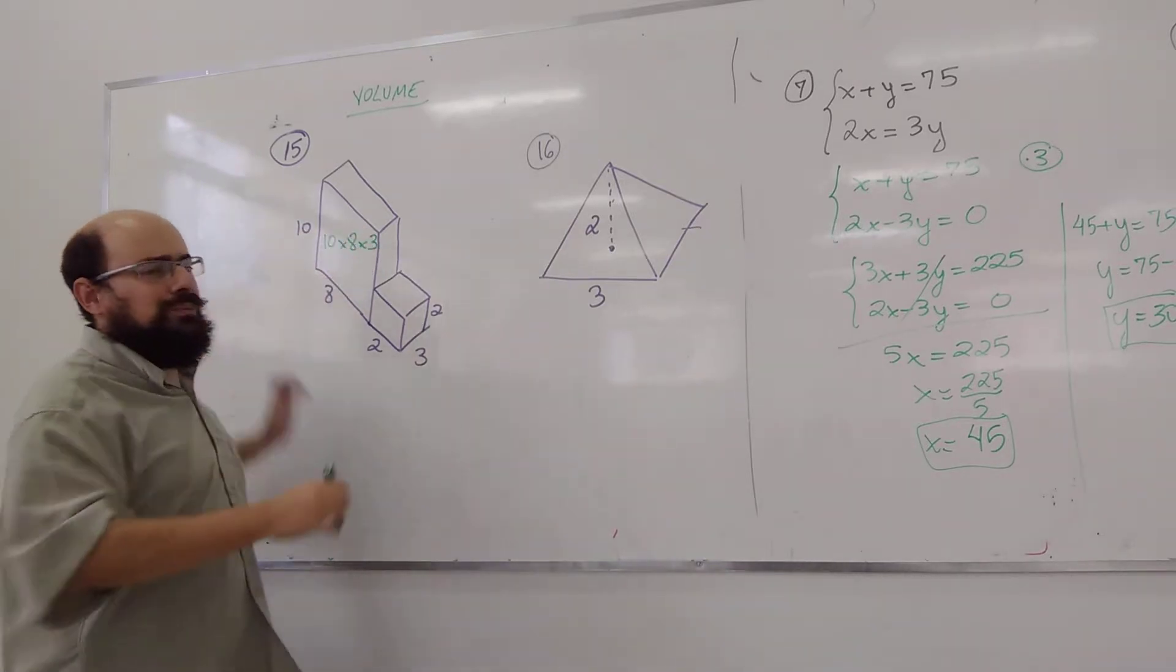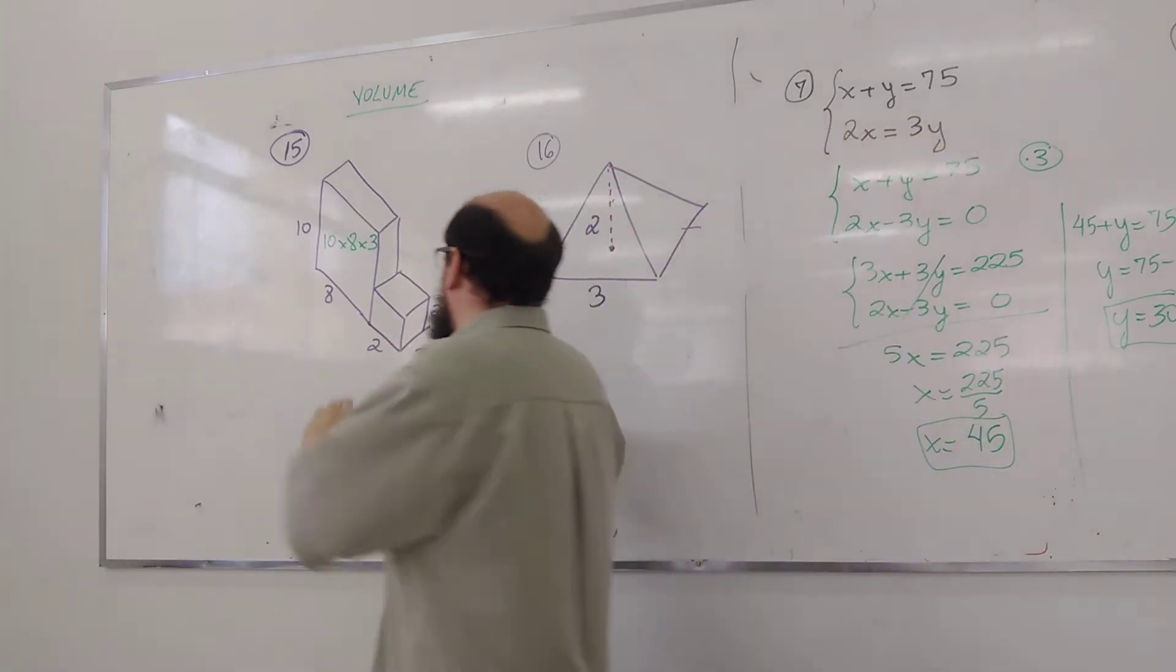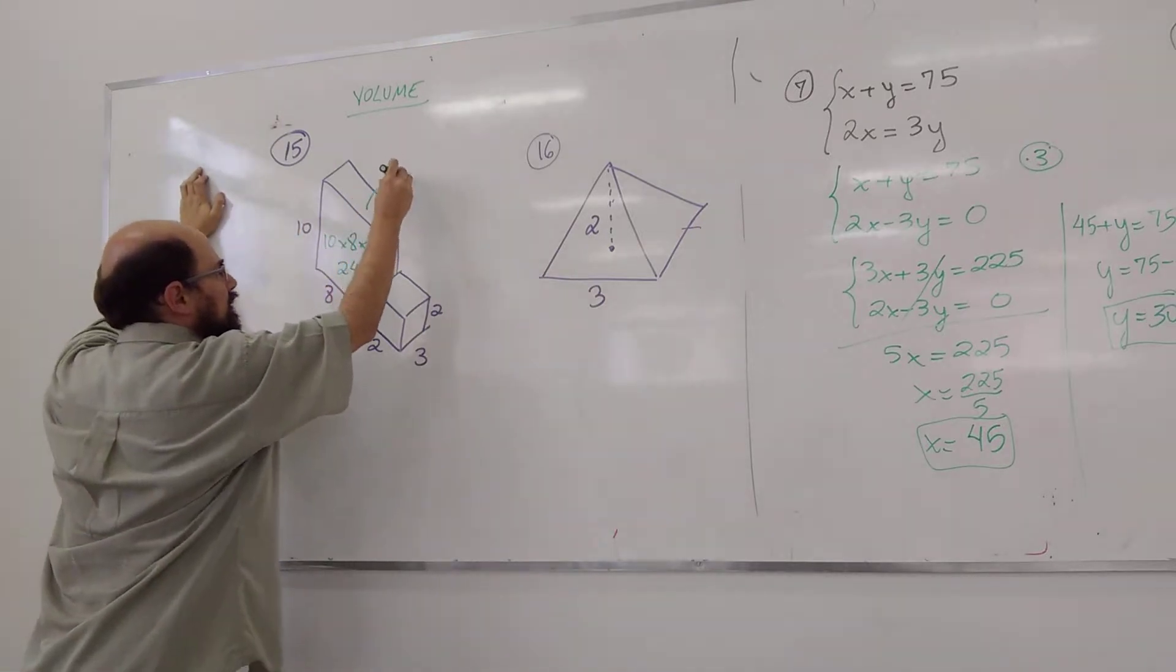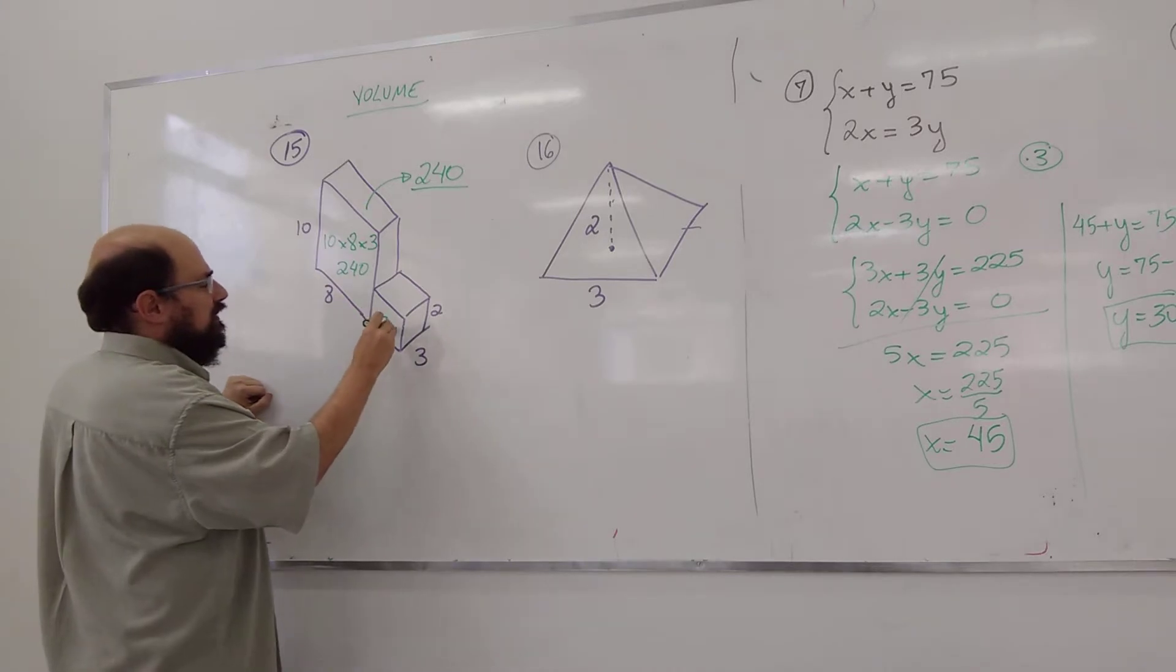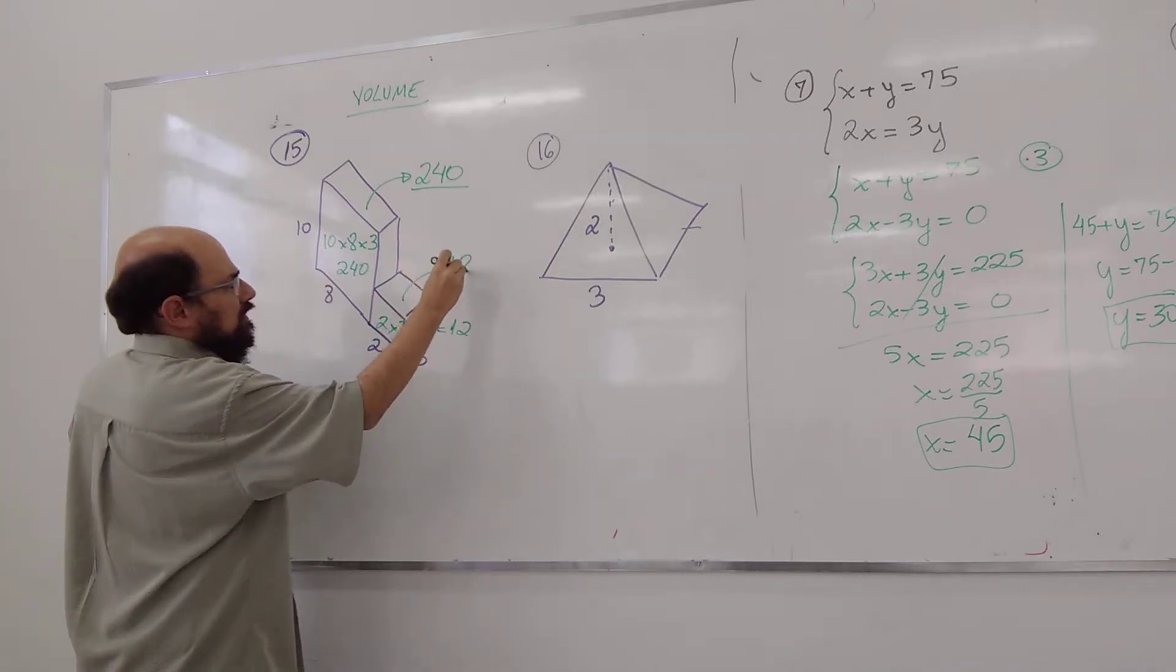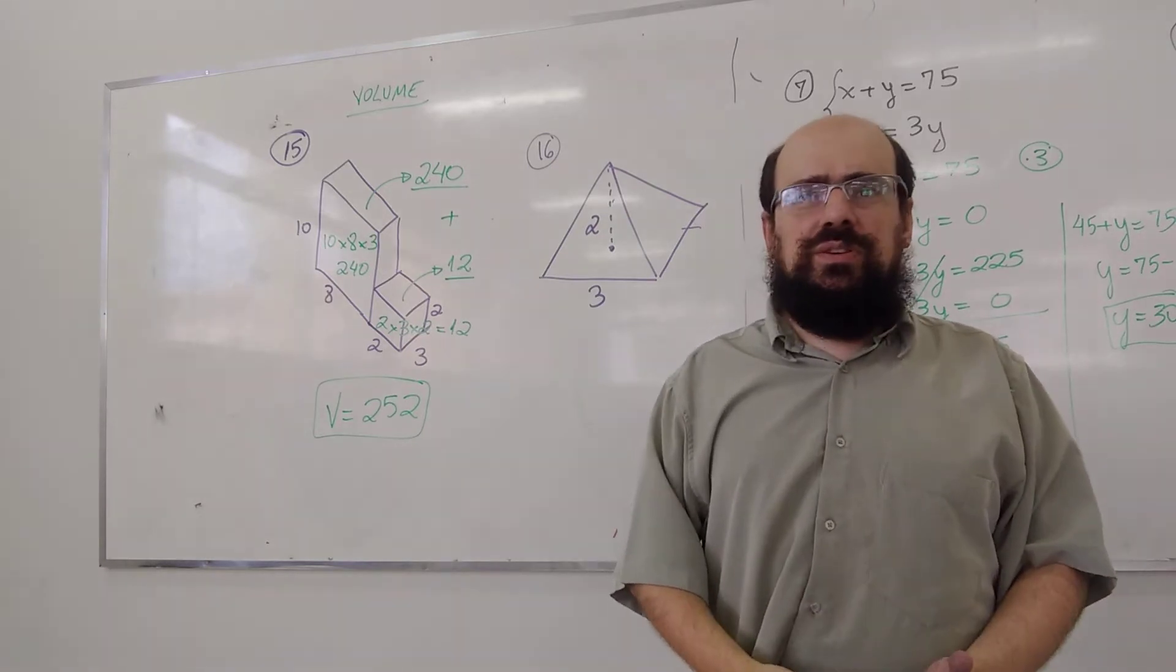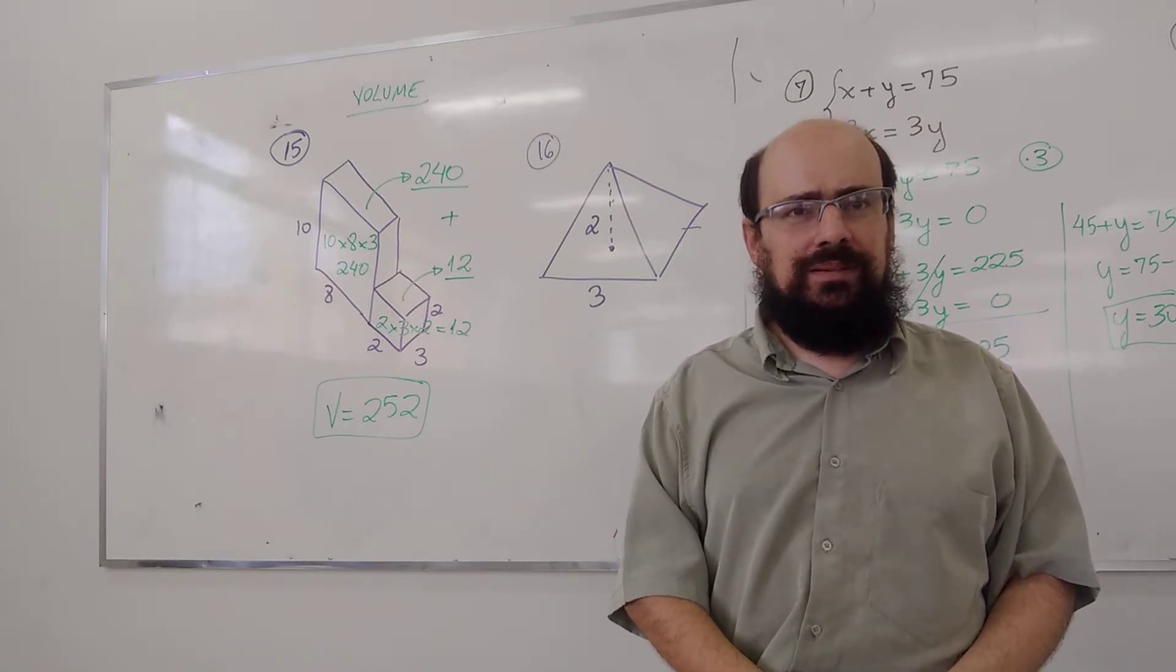Fabrinho, pra eu calcular o volume ali, é só fazer dez vezes oito vezes três. O dois não pertence a esse bloco. Então Jaspi, o volume disso aqui é 240. Essa caixa aqui mede 240. E essa caixa aqui? Dois vezes três vezes dois. Doze. Se eu juntar 240 com 12, o volume é 252. Então vocês viram que o volume é simples? Cai uma questão de volume no instituto? Foi a do lado. Mas é só isso.